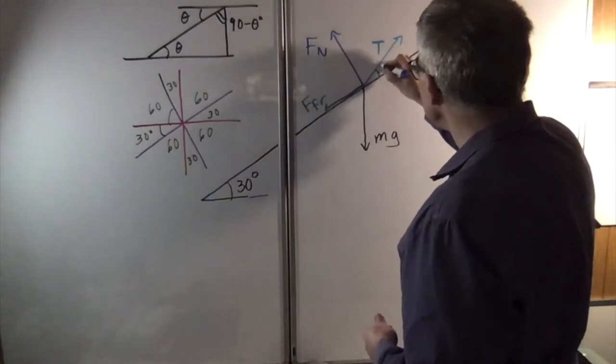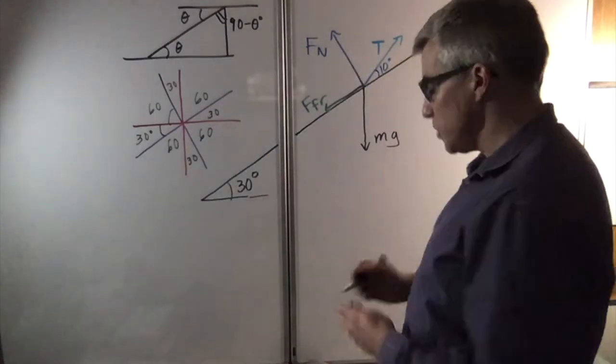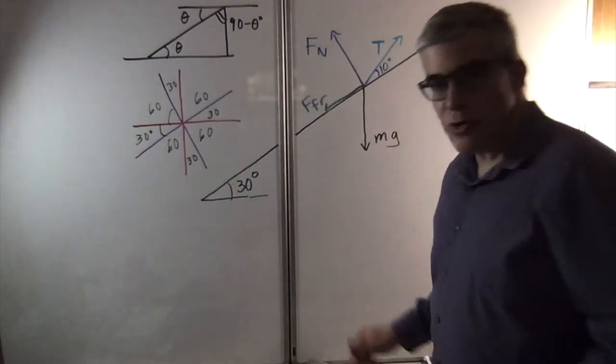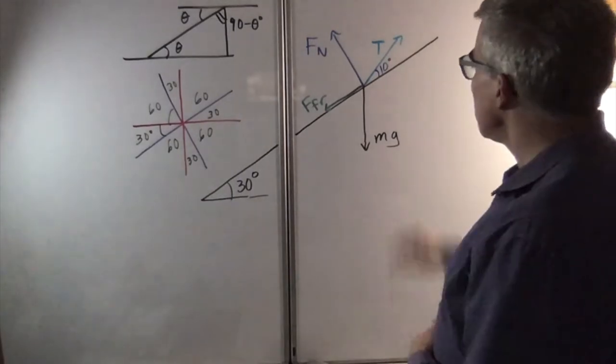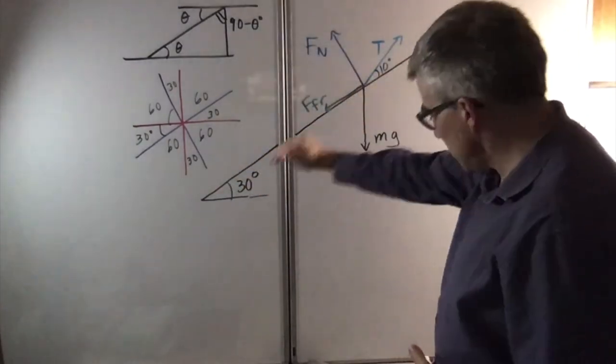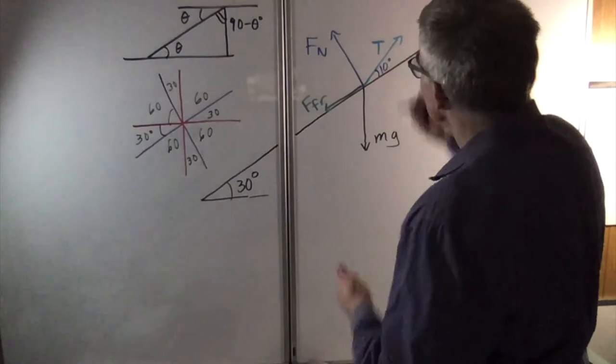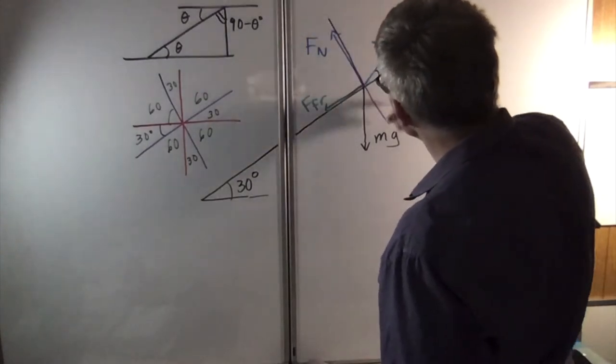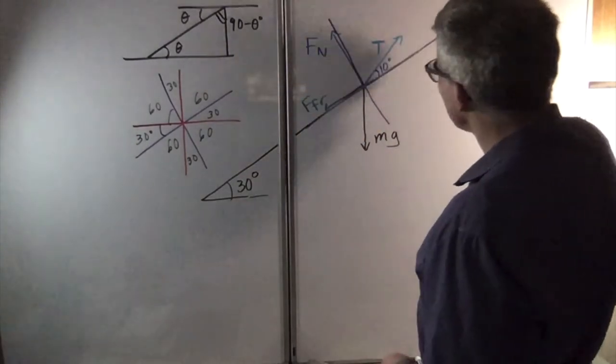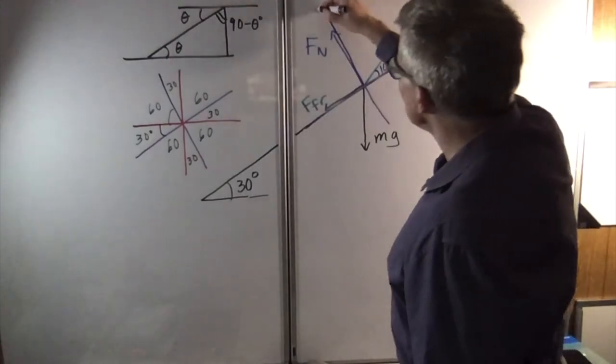Suppose that this here is 10 degrees, and that's 30 degrees. First order of business: what are the axes? The object is going to move this way, so that should be an axis. I'm going to color code in purple there and there. Positive x, positive y.